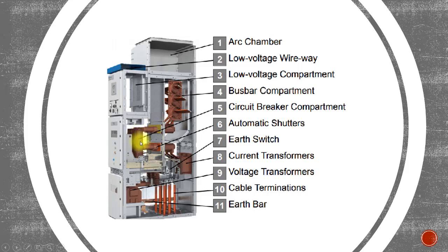The moving parts of the circuit breaker are inside the circuit breaker trolley. Number six is the automatic shutter. As soon as the breaker is racked out, the shutter closes, preventing anyone from touching the busbar or cable side. This is a safety requirement. In good designs, the shutter is also provided with a padlock.